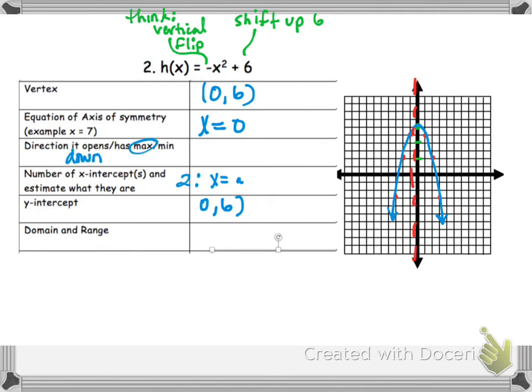It opens down. Therefore, it has a max. x, it's hard to tell. They're a little more than 2 and a little less than negative 2, so a little greater than plus or minus 2, I guess. You can't tell exactly. We will have techniques for finding that later.